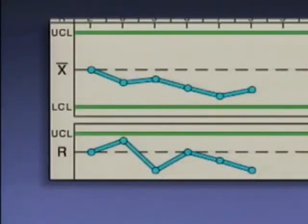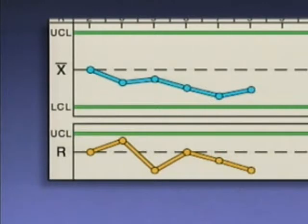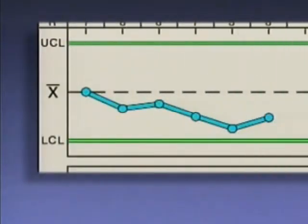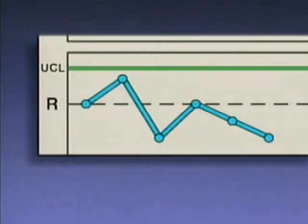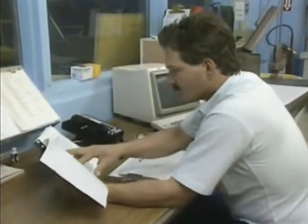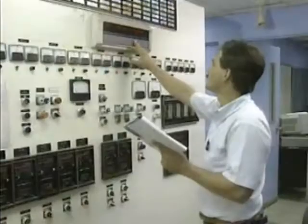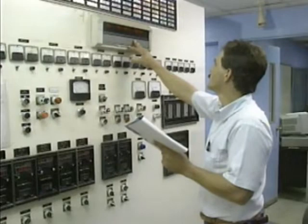This operator uses purity data from the chromatograph to plot a moving X-bar chart and a moving R chart. The operator notices a trend developing on the moving X-bar chart — the plotted values are moving toward the lower control limit. The moving R chart appears normal. Even though the moving R chart appears normal, the pattern on the moving X-bar chart indicates that the process is unstable. When an unstable condition is detected, operators typically check written logs and other current readings of process conditions to try to determine the cause of the problem.